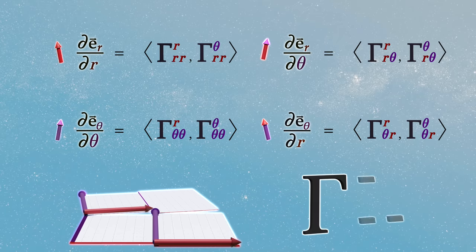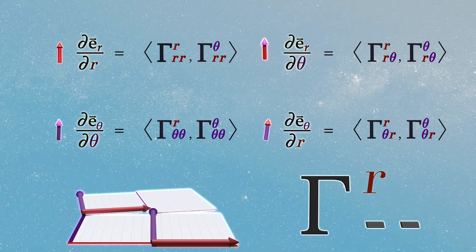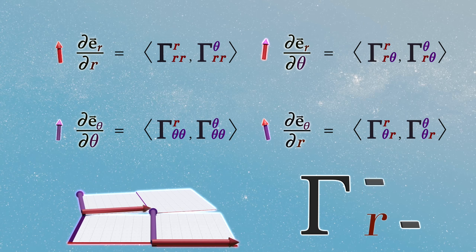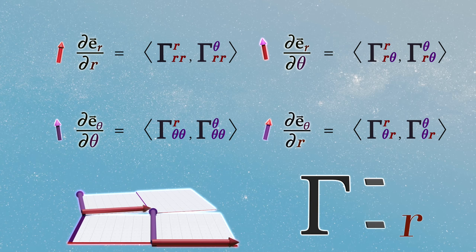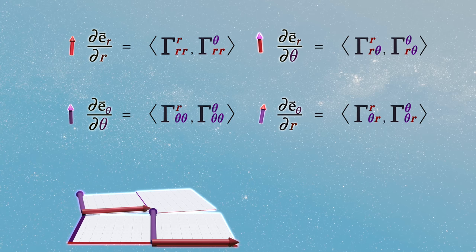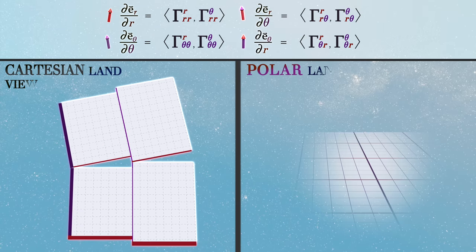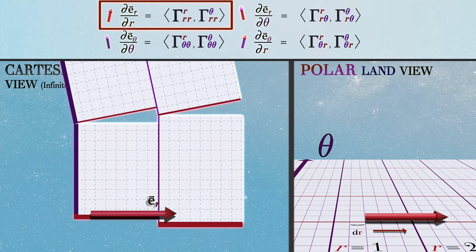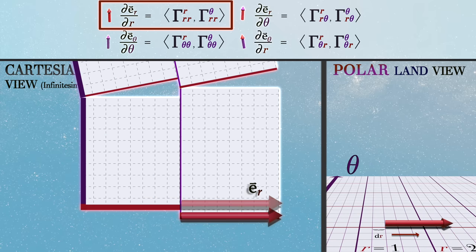The Christoffel symbols are notated with three indices. The upper index indicates which component of the derivative vector is being referred to. The lower left index indicates which basis vector is having its derivative taken. And the lower right index indicates in which coordinate direction we are taking that derivative. Now let's figure out what these symbols are by calculating each derivative vector. We'll start with the easy one: we take the r basis vector and transport it a coordinate distance dr in the r direction in Polar Land. Here there is no change in this basis vector in the real world whatsoever, so its derivative vector is zero — meaning our first two Christoffel symbols are likewise both zero.